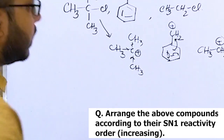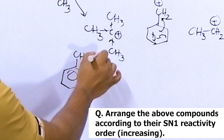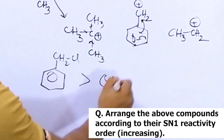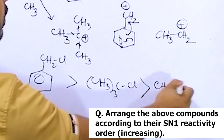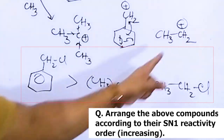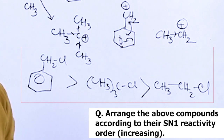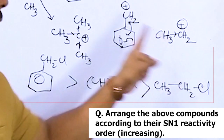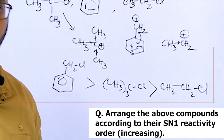So benzyl chloride will give SN1 at the fastest rate, then tertiary butyl chloride, and then ethyl chloride — because ethyl chloride's carbocation is 1-degree with only a +I effect support and no resonance support, making it the least stable carbocation.